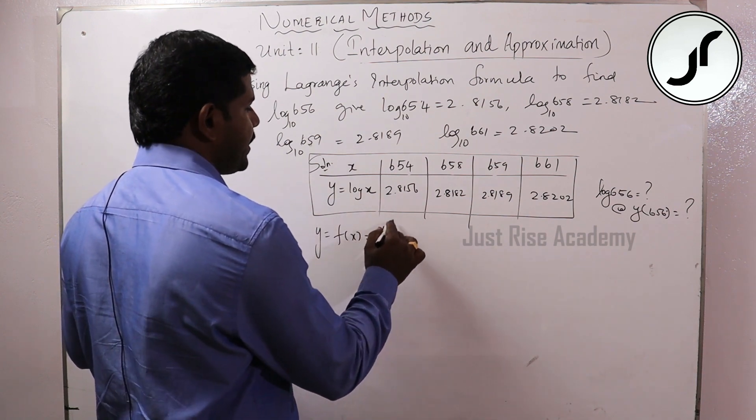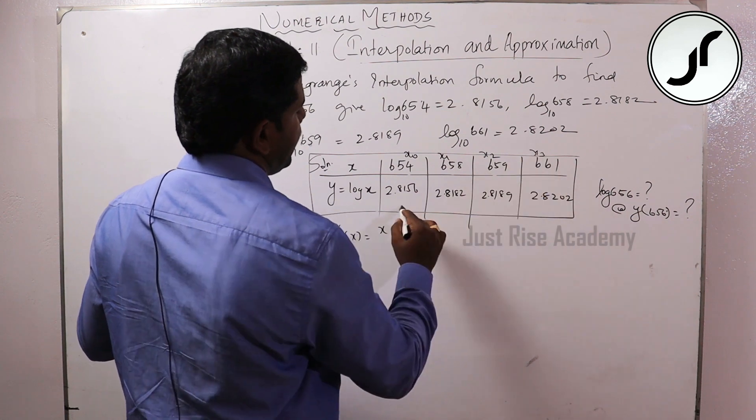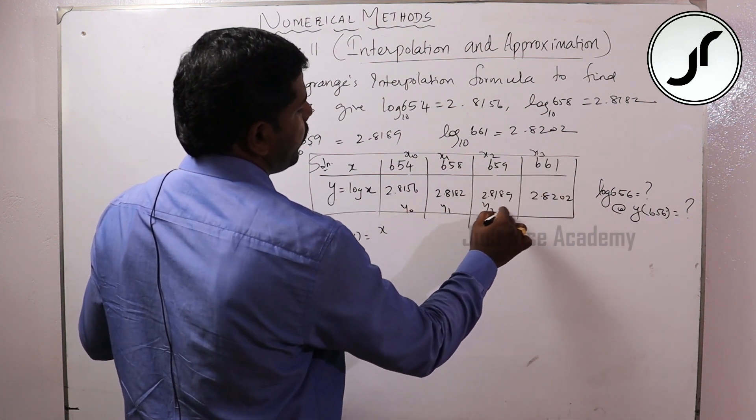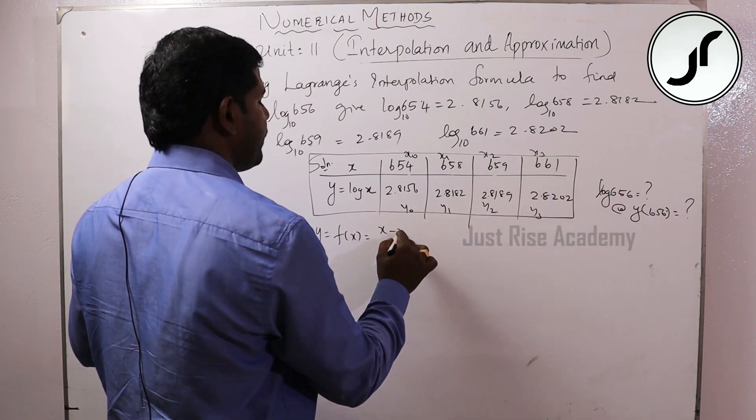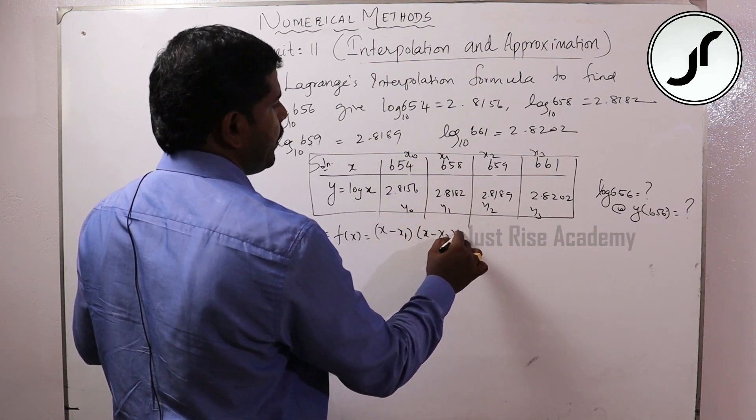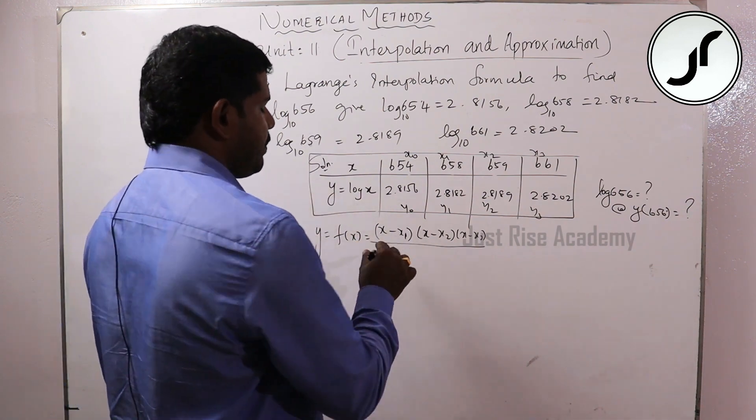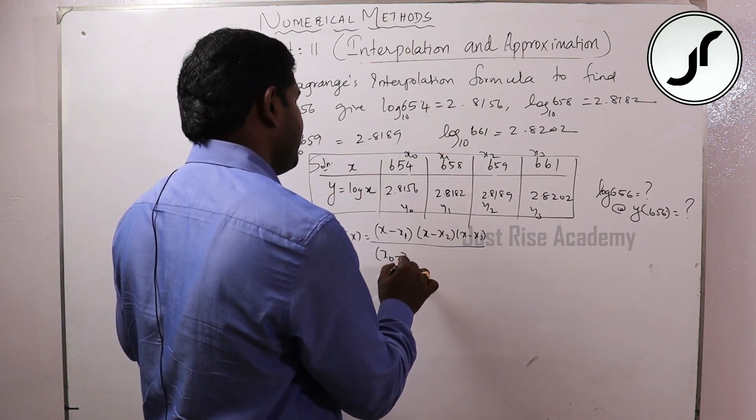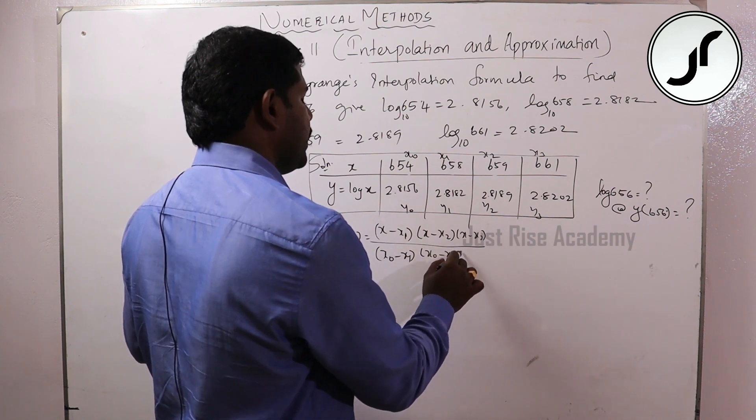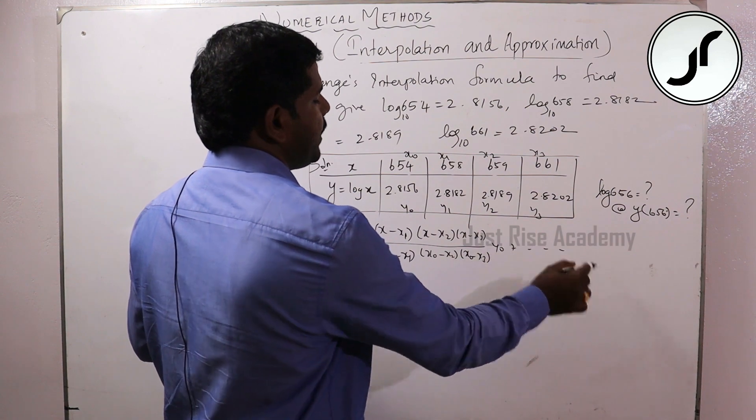Y of x equals f of x. X naught, x1, x2, x3, so y naught, y1, y2, y3. X minus x1 into x minus x2 into x minus x3 divided by x naught minus x1, x naught minus x2, x naught minus x3 into y naught plus...